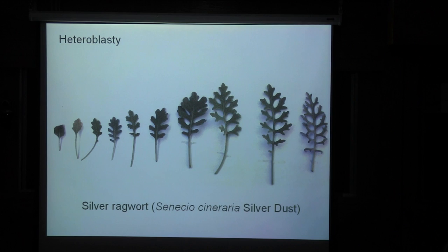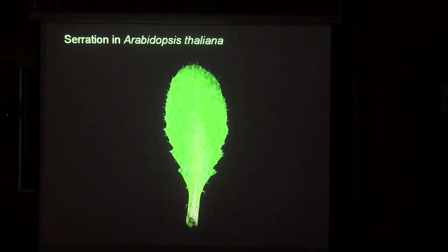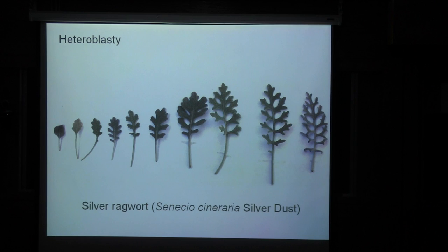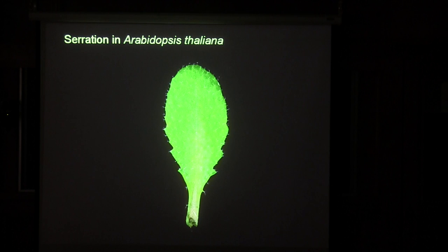Clearly, a plant can produce this diversity quite easily. The question is: can we comprehend where the diversity comes from? Although silver ragwort would be a nicer plant to work with to understand the progression from simple to compound leaves, nothing is known about the genetics of silver ragwort. So we started from a plant about which something is known, namely Arabidopsis.